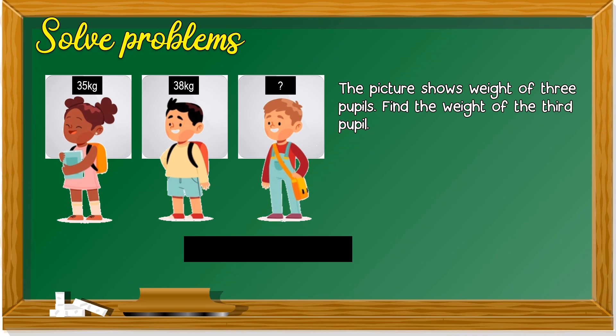Next question. The picture shows weight of 3 pupils. Find the weight of the third pupil. So the first pupil 35 kilo, second 38 kilo. We need to find the weight of the third pupil.